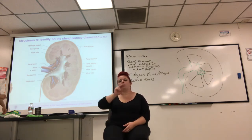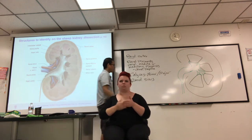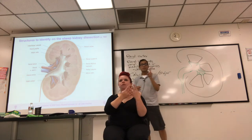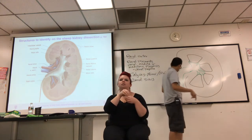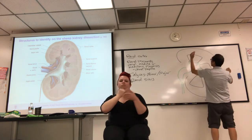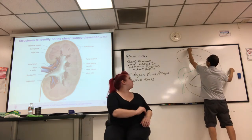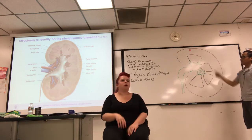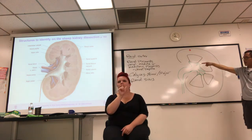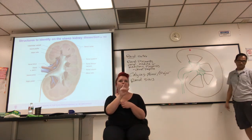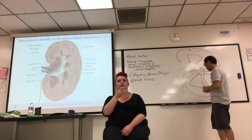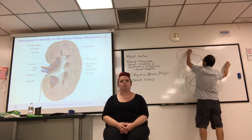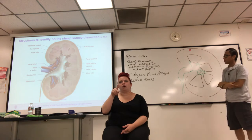The nephron we just looked at — the basic parts — the capillary bed that performs filtration is the glomerulus, and those are in the cortex. So the glomerulus is in the cortex, not in the medulla. That's where you find it. You put a capsule around that — the Bowman's capsule — also obviously in the cortex.